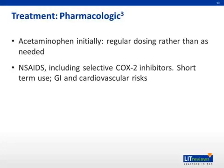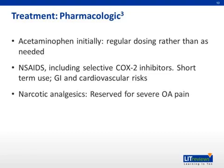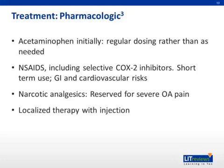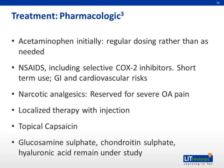Celecoxib, or Celebrex, is your only choice here, but carries an increased stroke risk, which must be addressed with all patients. Narcotics ranging from codeine to oxycodone are reserved for severe OA pain, and if a chronic need is anticipated, you should consider help from a pain specialist. All patients on narcotics should consent to a contract and random urine drug screen. Local therapy with hyaluronic acid analogs may be effective in some patients, and steroid injections can also help. Topical treatments may be beneficial as well. Glucosamine sulfate and chondroitin sulfate have been shown to be effective in some studies and not useful in others — the jury on these therapies is still out.